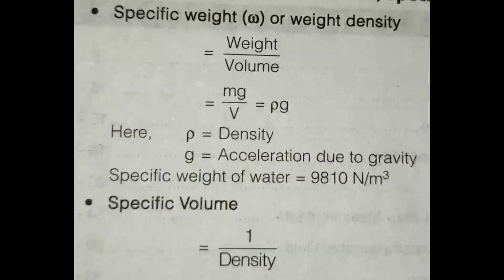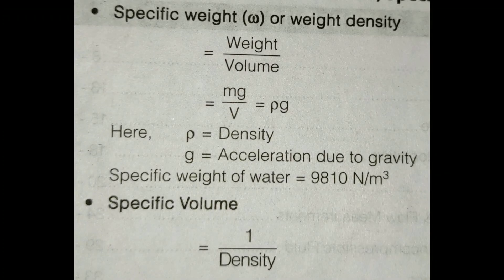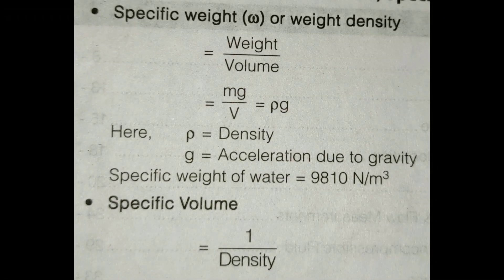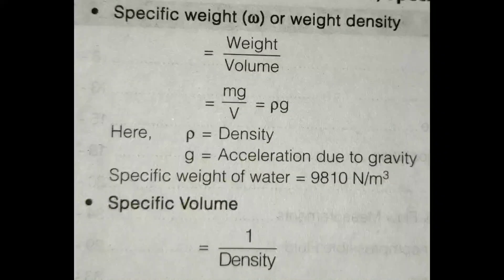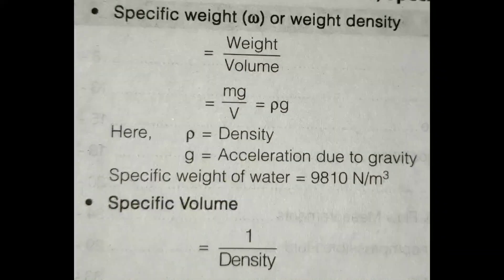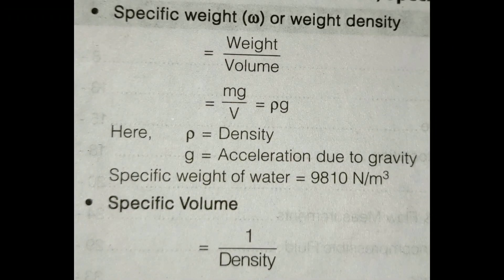Specific weight is denoted by omega and is also known as weight density. It is the ratio of weight to volume: weight equals mg divided by volume. Since mass divided by volume is rho, specific weight equals rho times g, where rho is density and g is acceleration due to gravity. The specific weight of water is 9810 N per cubic meter. Specific volume is simply 1 divided by density.